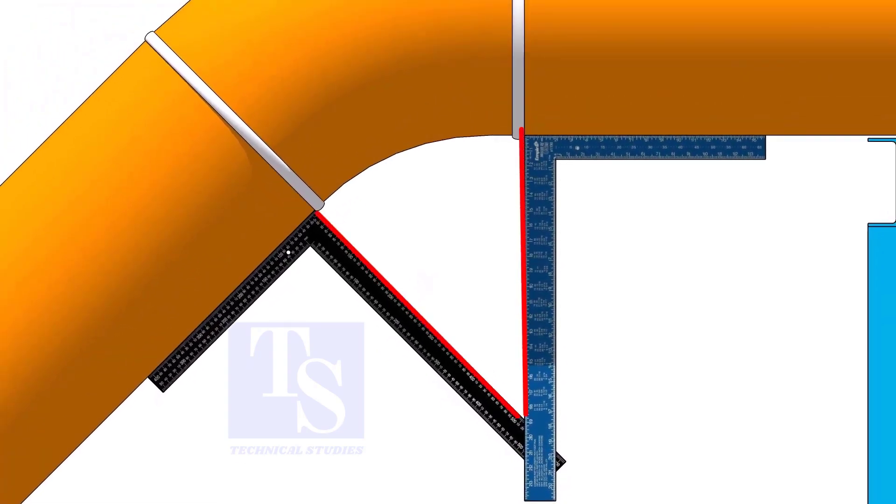Measure the distance from the pipe to the point where the right angles bisect each other. Measure only one side is enough. Now, carefully measure the distance between the corners of the right angles.